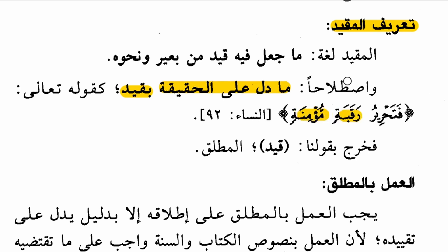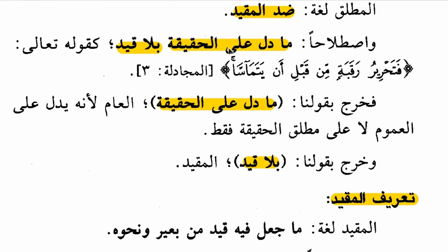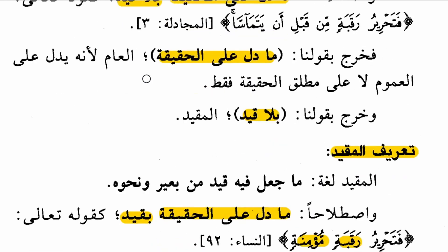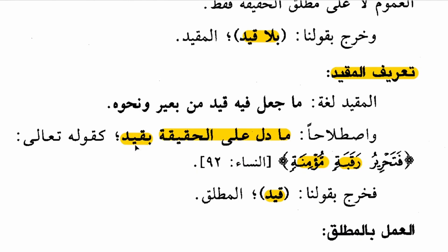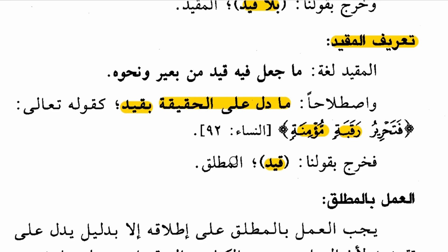It is not just anything that falls under the actuality of being a slave — no, it is anything that falls under the actuality of being a slave but has been qualified with the condition that the slave should be believing. There is a description that narrows it down and qualifies the actuality. The qualifying factor removes the mutlaq for us, because the mutlaq is that which points to the actuality of something without a qualifying factor. So these are the two definitions of mutlaq and muqayyad.